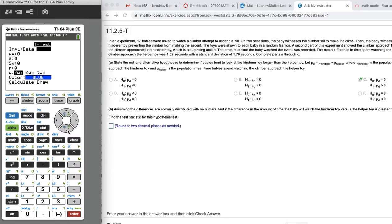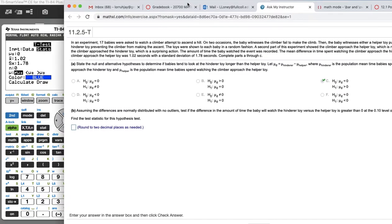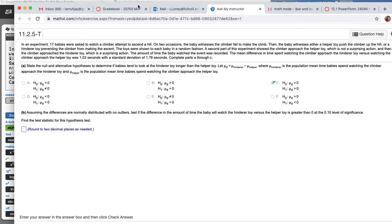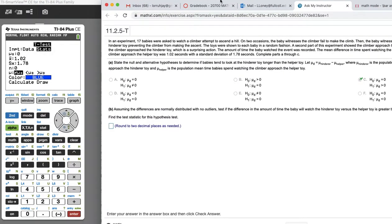So mu naught is zero. You can see that in your hypothesis right here. And then x-bar was given as 1.02. That is the mean of the differences in the times the babies watched the experiments. And then the standard deviation was 1.78. That was also given. And then the sample size, it said that there were, I don't remember, 17 babies. So that would be the sample size.